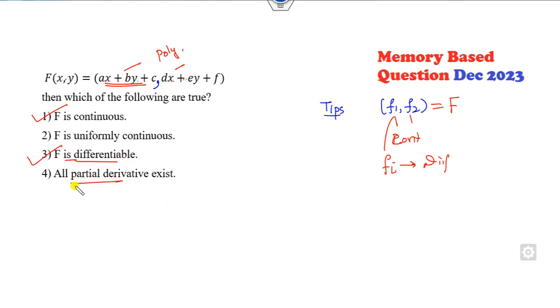F is differentiable - when will it be differentiable? When fᵢ's are differentiable, then it is also differentiable. Once the function is differentiable, you can also see the partial derivative exists. Whether it's uniformly continuous may or may not be - it depends upon the values of a, b, c, d, f. Right answers are A, C, D.